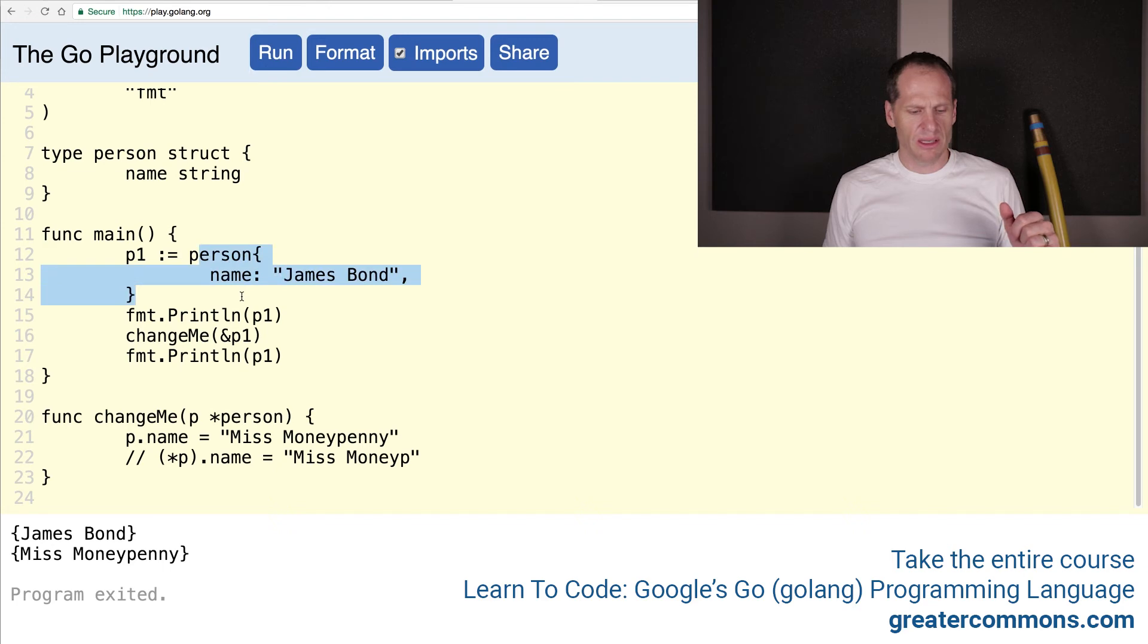All right, so we create a type person, a value of type person, we assign it to p1, we print it out, we get James Bond, we call changeMe, we pass in the address, this takes a pointer to type person, a value of type pointer to person, type pointer to person, right, so value of type pointer to person.